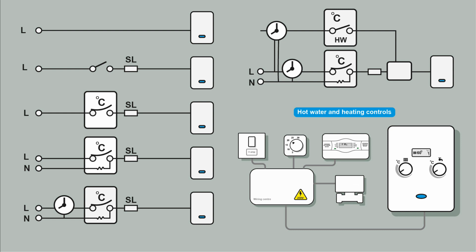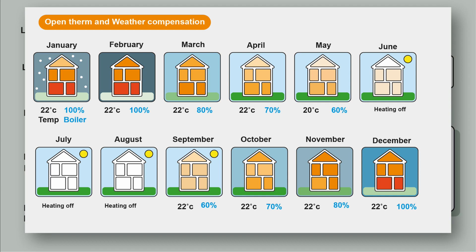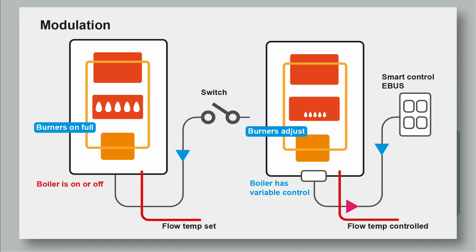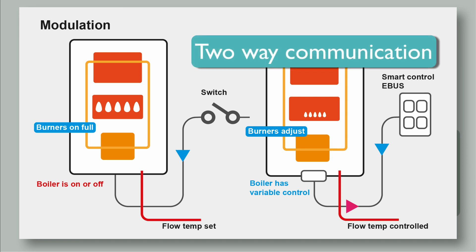Then people wanted more control, so we started getting wireless connections between the thermostat and a receiver next to the boiler, because it was tricky running a connection from the thermostat to the boiler. Then Wi-Fi became a thing - people wanted to control the heating from their phone. Heating is getting smarter: modulating boilers can alter the temperature of the flow. There's technology that can sense the weather and the seasons, so the boiler doesn't work as hard in warmer months and ramps up in colder months - weather compensation and OpenTherm. The boiler can sense outdoor temperature and alter the temperature of the water it sends out.